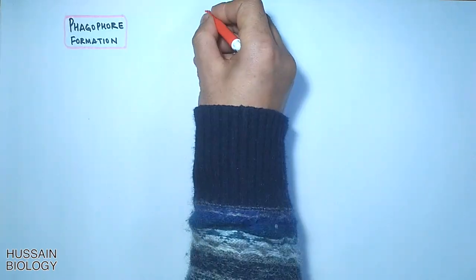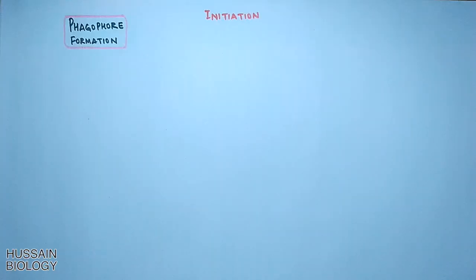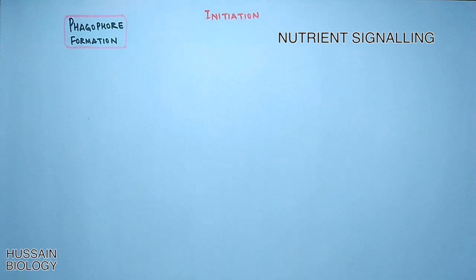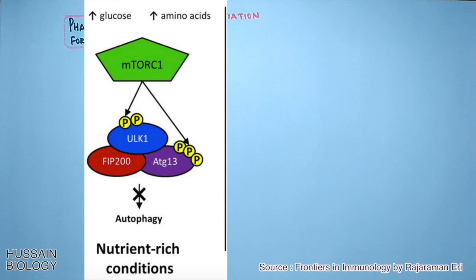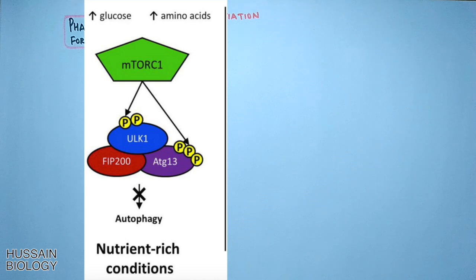In phagophore formation, we get the initiation signal in the form of nutrient signaling. In other words, autophagy is initiated when there is a low presence of amino acids and glucose. We know mTORC1 is the nutrient-dependent mTOR, which gets activated when there is high availability of glucose and amino acids, as depicted in the diagram on the left.